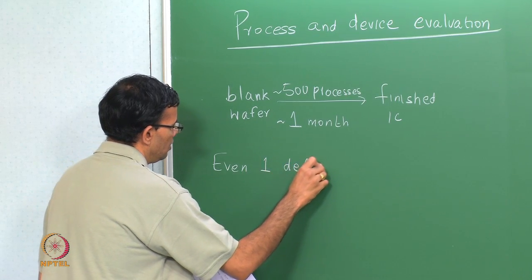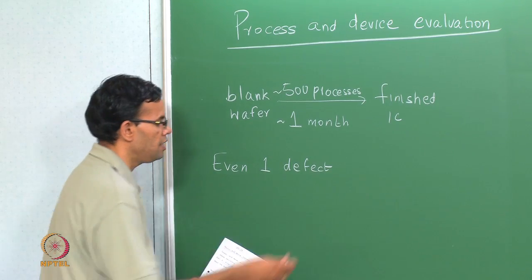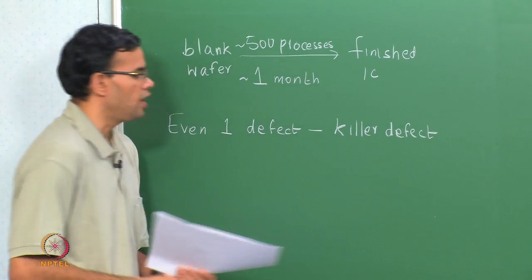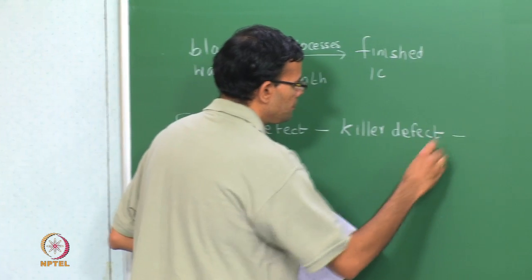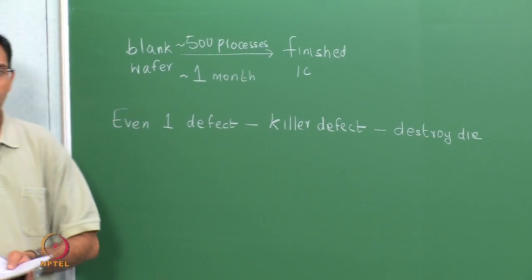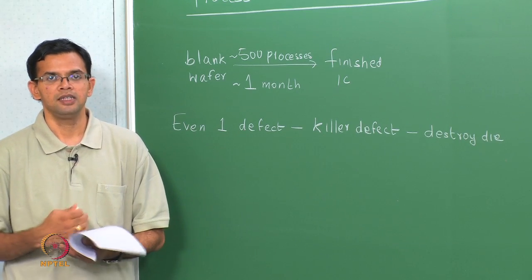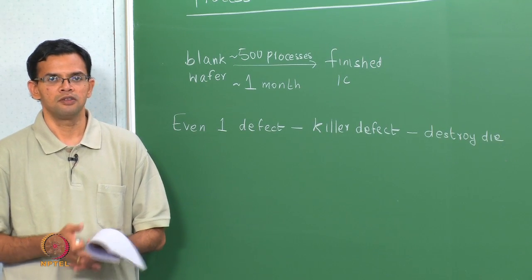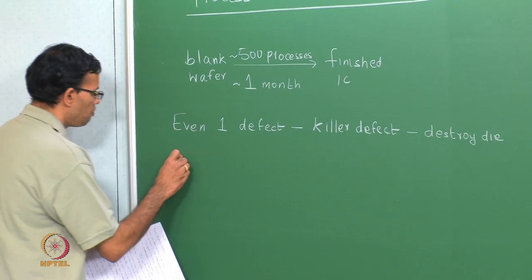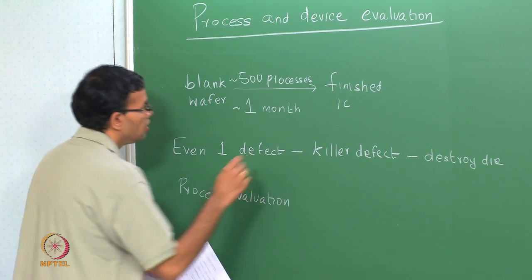Defects that will ultimately destroy the electrical functionality of the die are called killer defects — even one killer defect can essentially destroy the die. Because of this, process evaluation is very important and is usually done at each and every stage of the process to make sure that the wafers are getting the exact treatment they are intended to get.